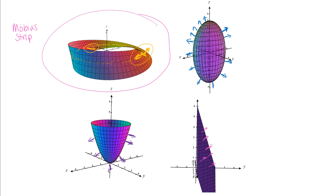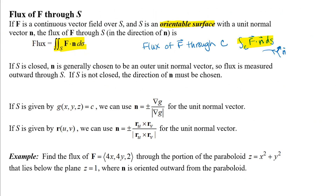This is the idea that as you come all the way around, the normal will have changed sides of the surface — making this a non-orientable surface. Most of the ones in your homework are orientable surfaces, so you can define a unit normal vector — either outward or inward, upward or downward — that you can clearly define. We understand what an orientable surface is: you can define a unit normal vector.